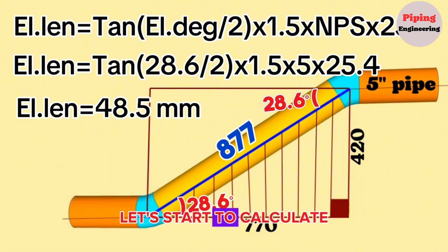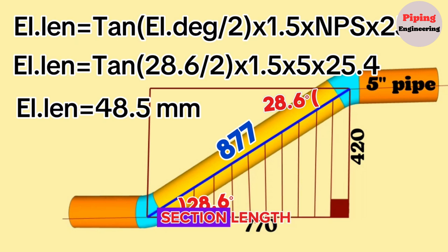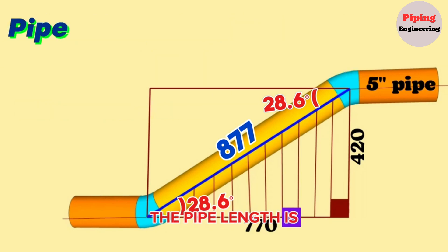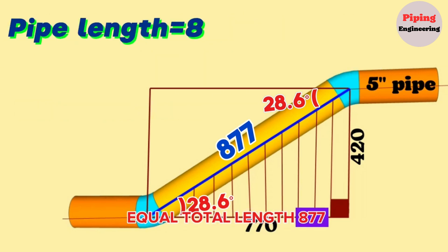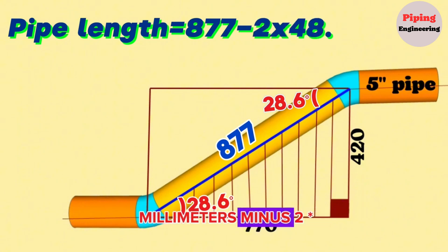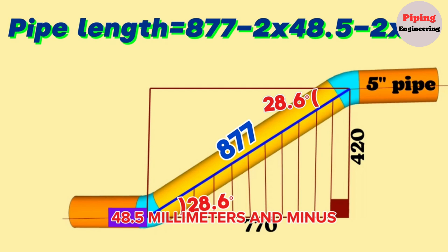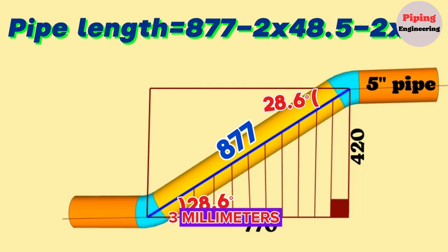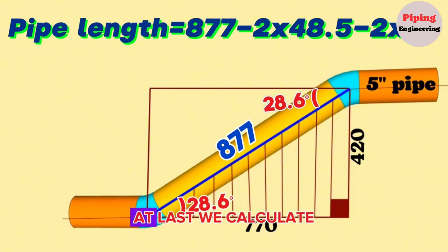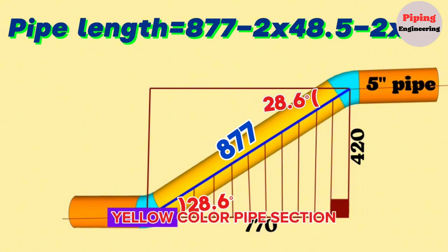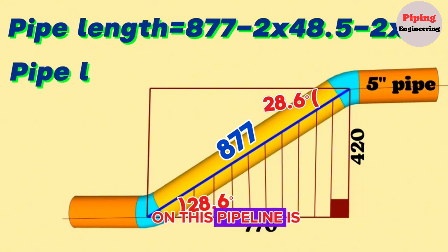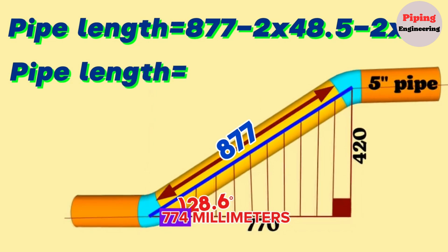Let's calculate the yellow color pipe section length. Pipe length equals total length 877 mm, minus 2 times the 5-inch 28.6-degree butt weld elbow length of 48.5 mm, minus 2 times the welding gap of 3 mm. We calculate and find the length of the 5-inch yellow color pipe section on this pipeline is 774 mm.